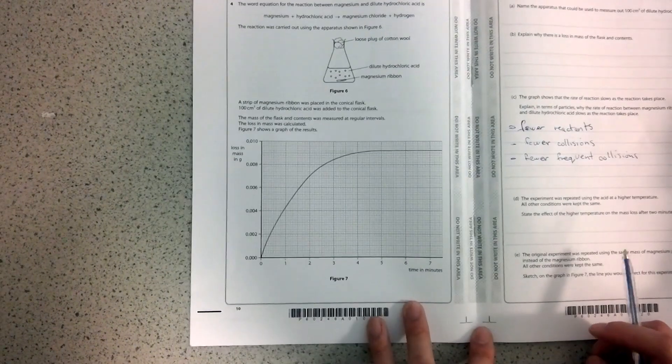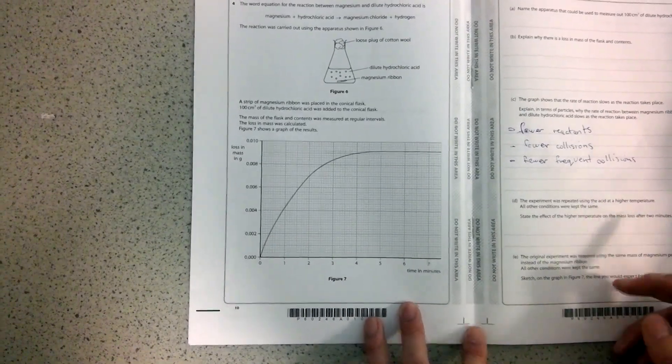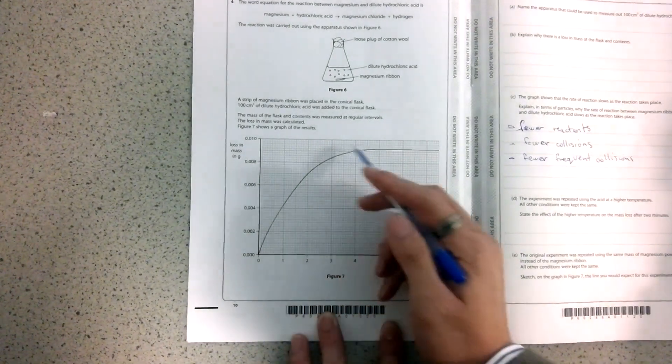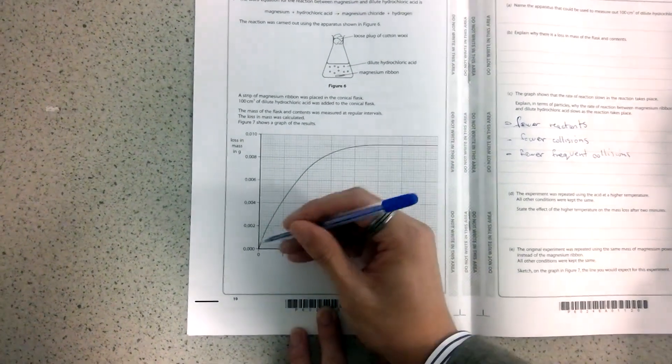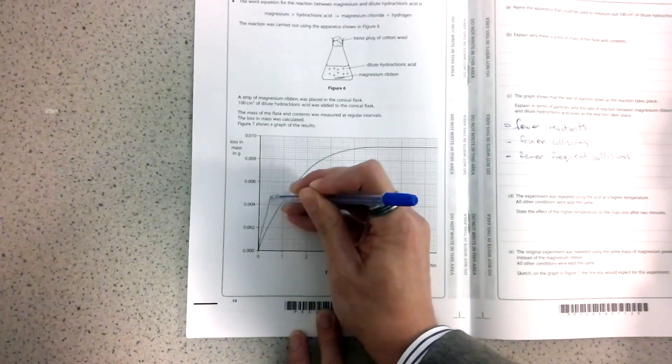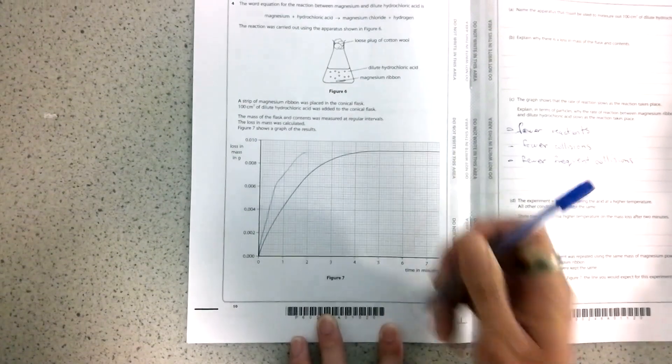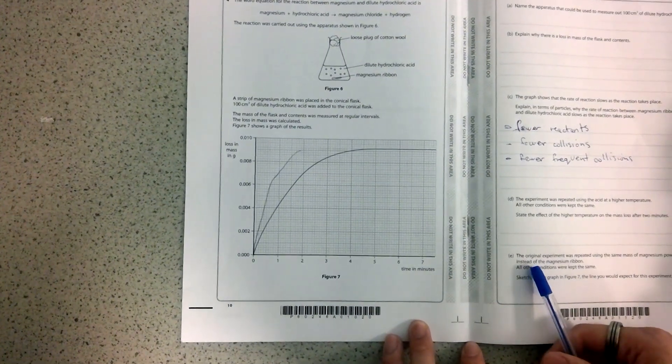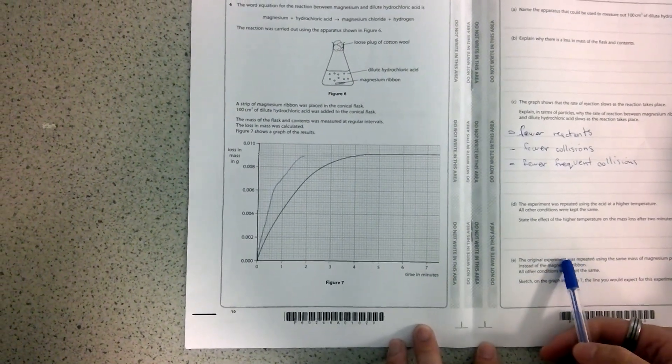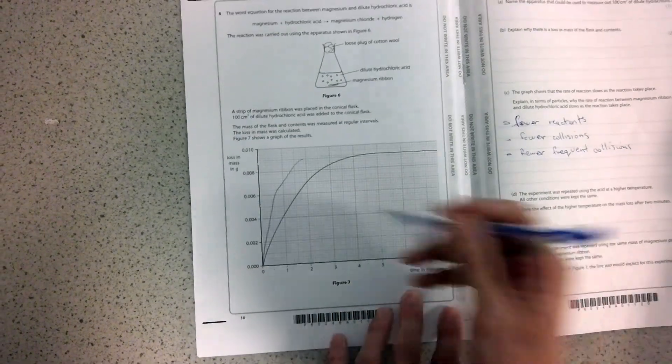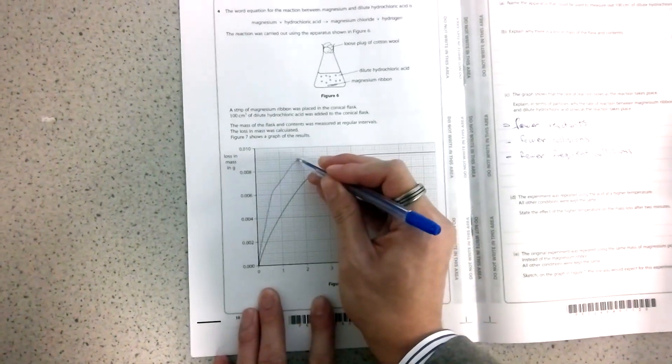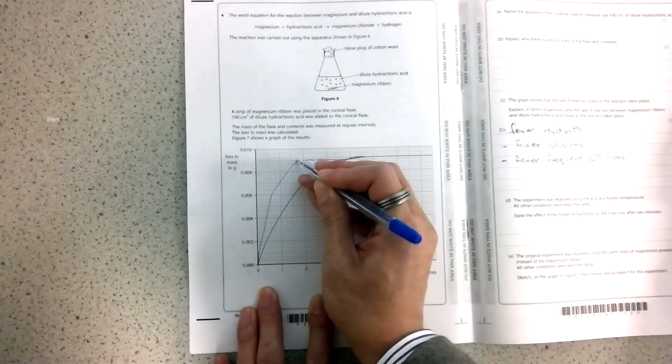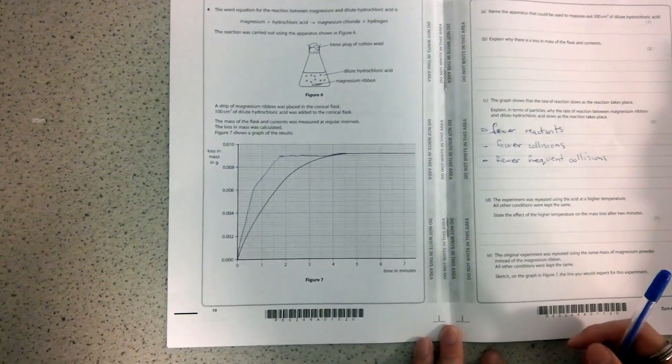The first mark, you need to make sure that, because the reaction is faster, it's going to be to the left side of the original line, and it's also going to be steeper. So it needs to look like this. For the second part of the mark, because it's the same mass of magnesium that you're using, the line should end at the very same height. So you need to make sure it ends at the same height as the original line did.